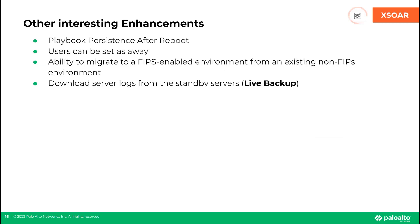Now there's Playbook Persistence. This means that when there's a reboot, the application will now gracefully pause any running playbooks and then resume them where they left off when your server comes back online. The next feature allows a user to set themselves to away. This status is visible to other users, and shift management will only assign tickets if the user is on-call and active. You can now migrate a non-FIPS environment to a FIPS environment, which is fantastic if you're a U.S. government user. You can also download the server logs from the standby server without having to log into the backend for a live backup configuration, by accessing the production log bundle from the active server or by logging into the standby server directly.